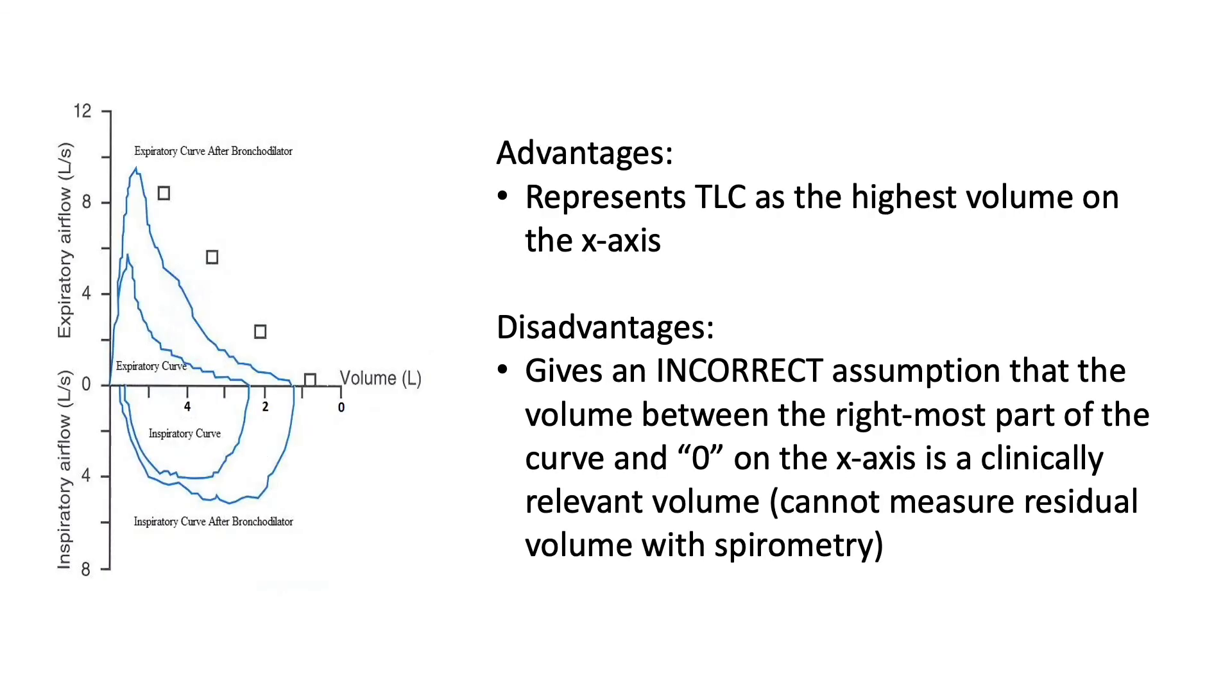Next, we'll consider the zero on the right side of the graph. The advantage of this display is that it may be a little bit more intuitive with the total lung capacity being on the left-hand side of the x-axis, representing TLC as the highest volume on the x-axis. But the disadvantage is that it incorrectly gives this assumption that there's some meaningful number that is the distance from the flow volume loop to the zero point on the x-axis. This is really not a clinically relevant volume. Remember that you cannot measure residual volume on spirometry. So this volume between the zero and the flow volume loop is really clinically meaningless.